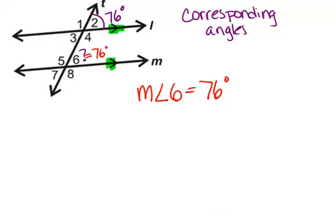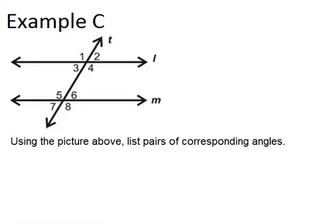Alright, let's go on to our final example. Using the picture above, list pairs of corresponding angles. So it's good practice to be able to make sure you can list all four pairs, and there will be four pairs when it's this typical situation of two parallel lines and a transversal. So the first one I see is angle 1 matches with angle 5.